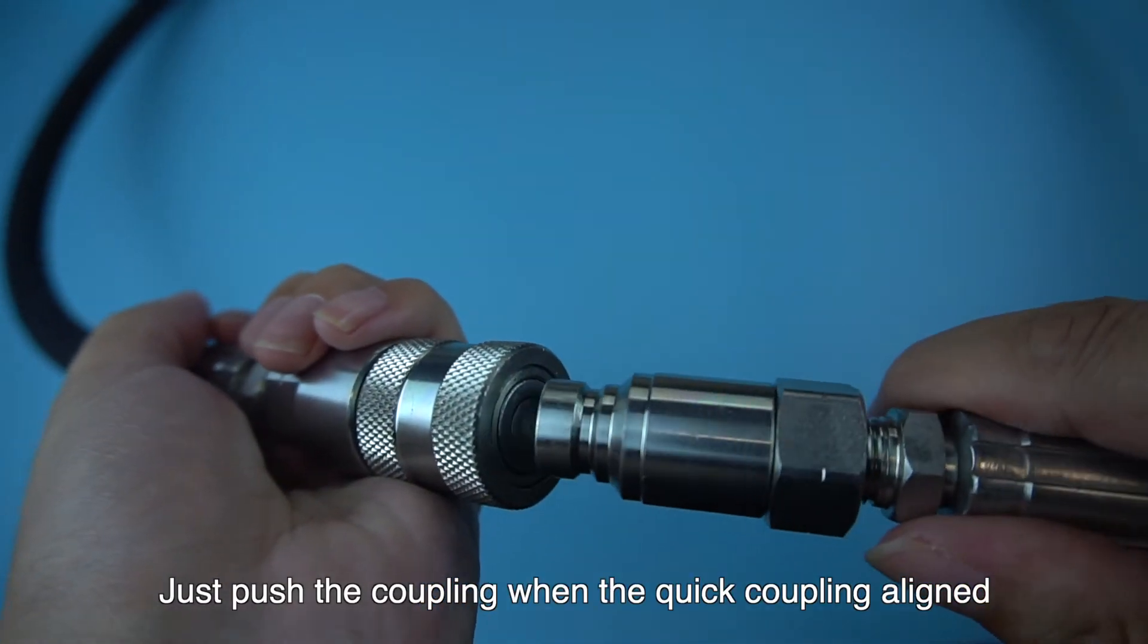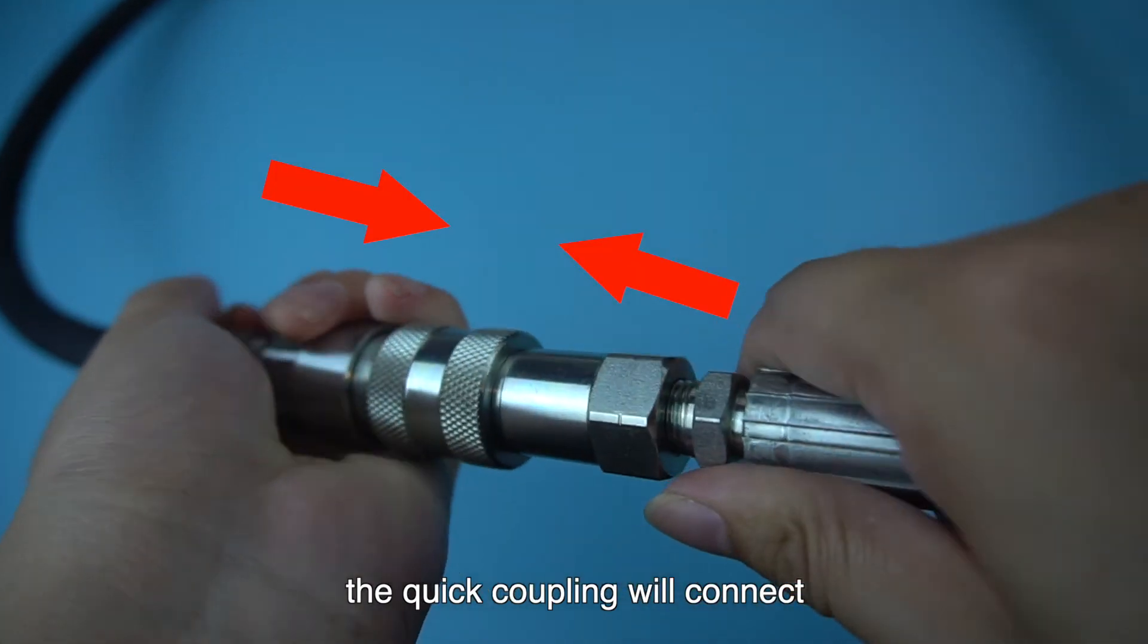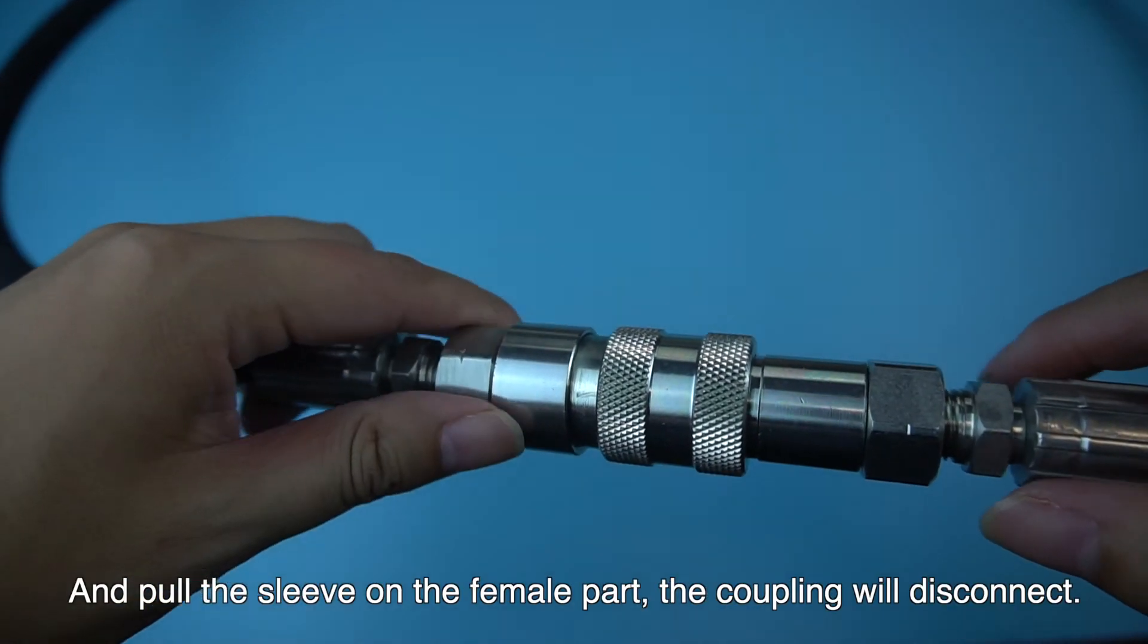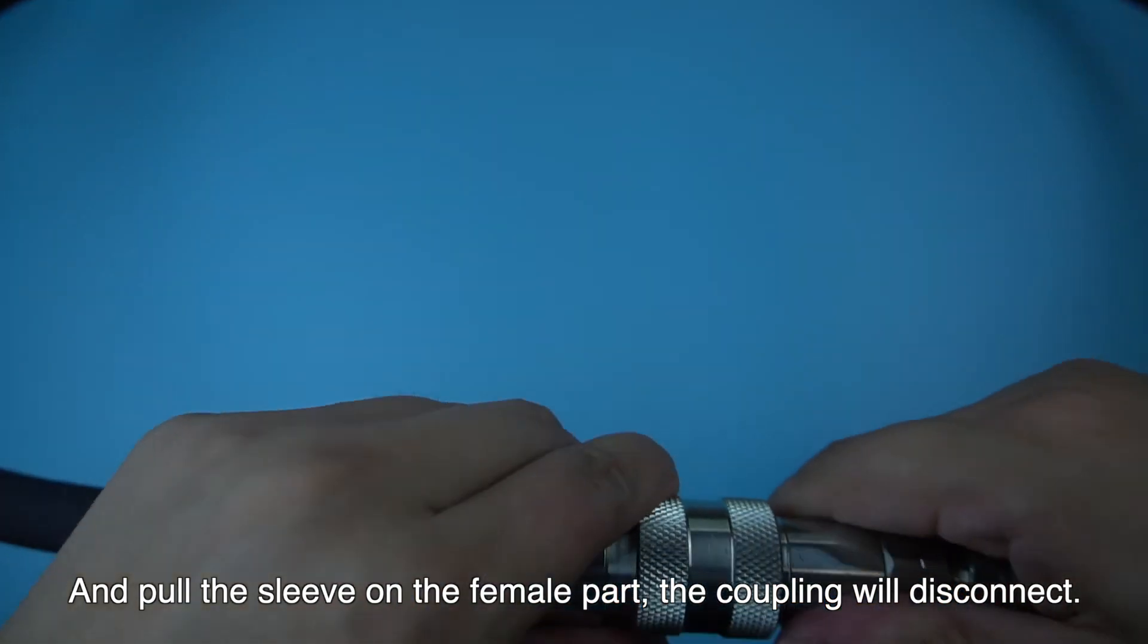Just push the coupling when the quick coupling is aligned, the quick coupling will connect. And pull the sleeve on the female part, the coupling will disconnect.